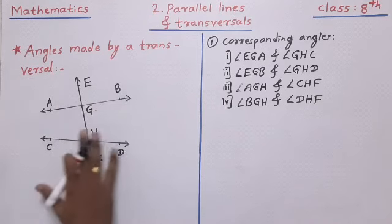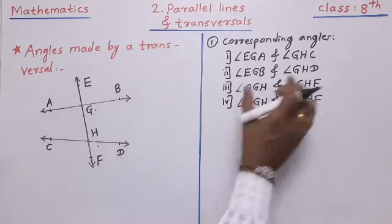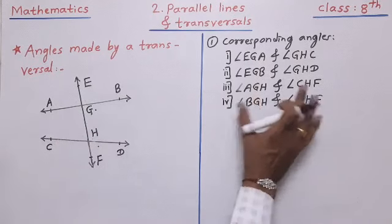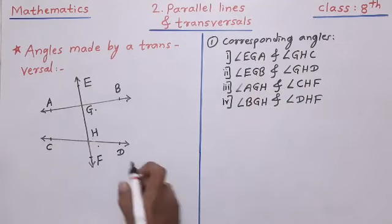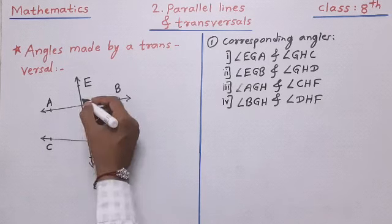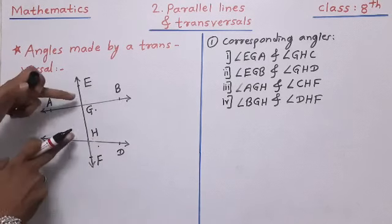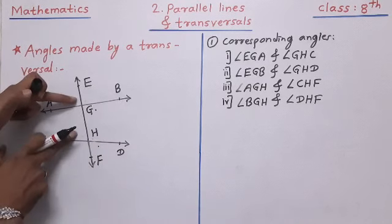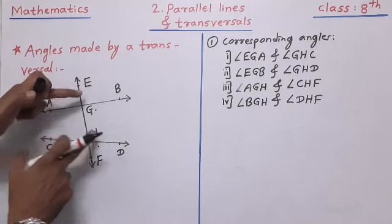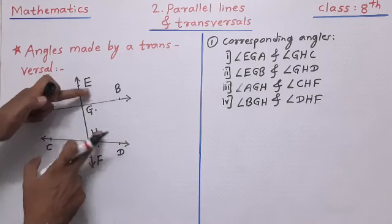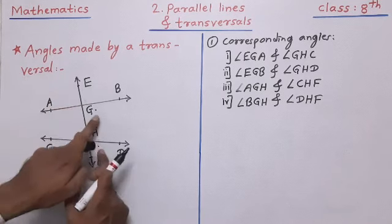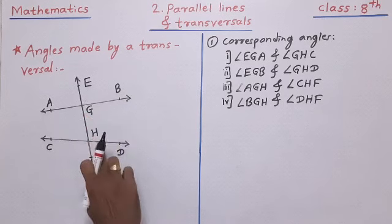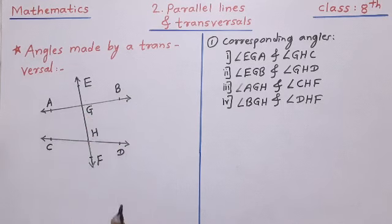When a transversal intersects two lines, four pairs of corresponding angles are formed. If the name of the figure is changed, the names will also be changed. You have to remember only the positions: first pair here, second pair here, third pair here, fourth pair here.